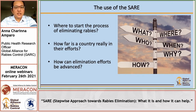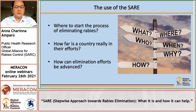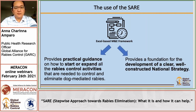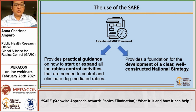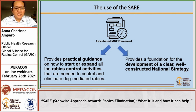But where do we start the process? How do we know how far a country really is in their efforts, and how can we further advance those efforts? The SARA tool overcomes these issues by defining a clearer set of activities that need to be addressed and provides a chronological order to them. The SARA tool is a Microsoft Excel-based monitoring and evaluation framework.